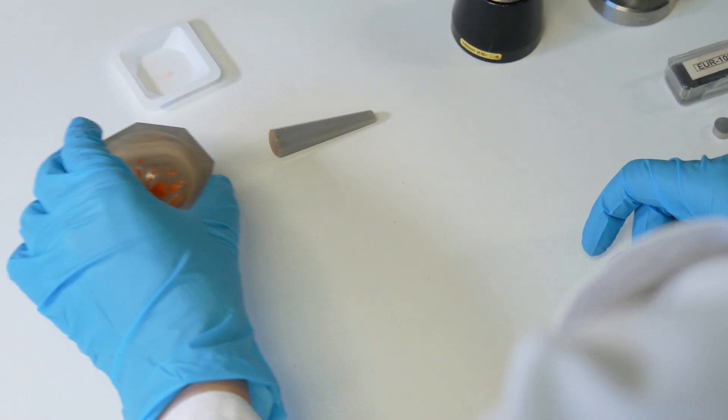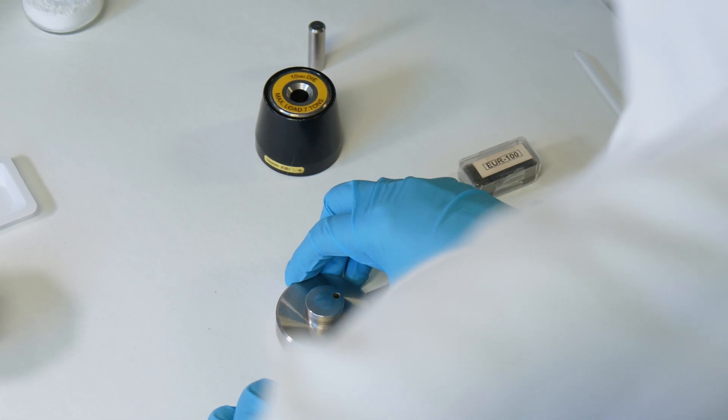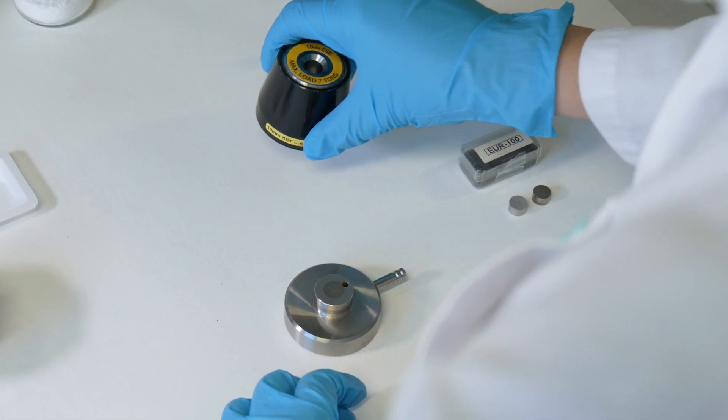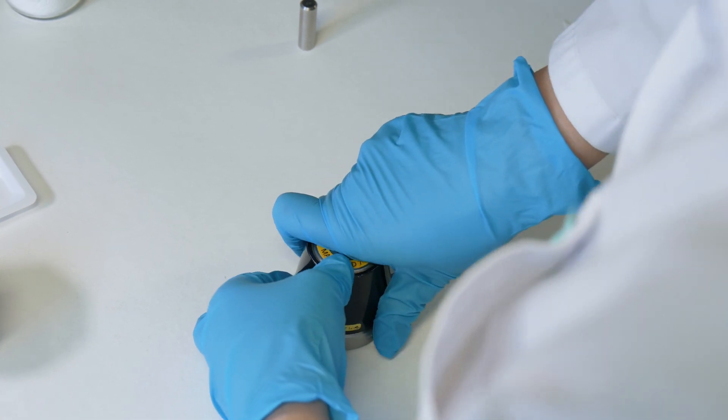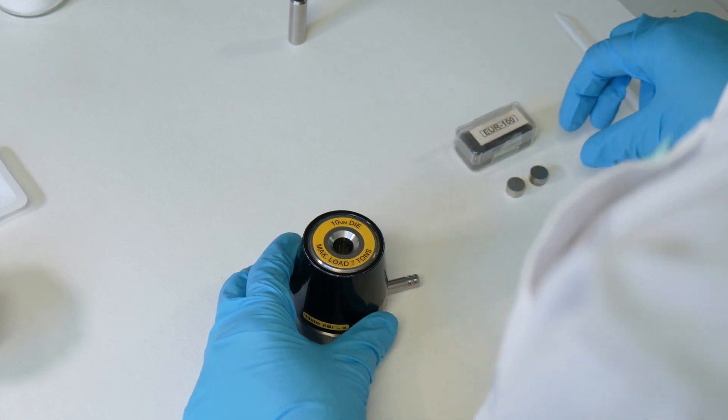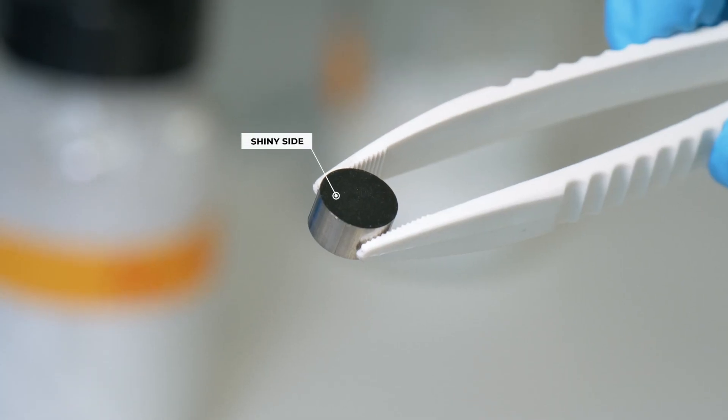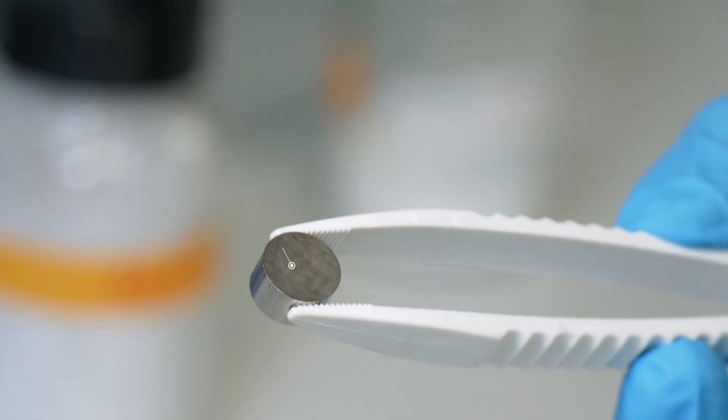Now you need to assemble the pellet die. Mount the mold on the base. Insert a die in the cavity with the shiny side up so it is in contact with the powder.